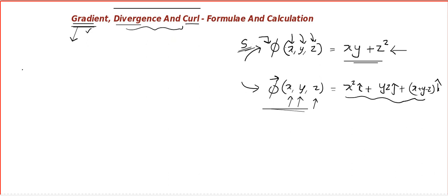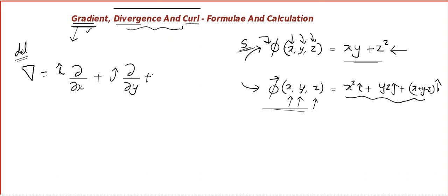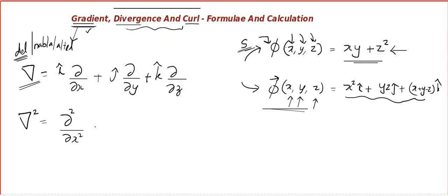Divergence and curl are defined for vector valued functions. Before we start, I introduce an operator called the del operator. It can be called del, nabla, or atled. Del is given by i·∂/∂x + j·∂/∂y + k·∂/∂z — basically a partial derivative operator. And del squared, or nabla squared, is given by del·dot·del, which gives second order partial derivatives.